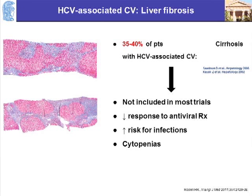This vasculitis appears during the late stages of disease. Biopsies show that about 35 to 40% of these patients already have cirrhosis. This is important because these patients are usually not included in trials, do not respond so well to antiviral therapy, and have an increased risk of complications like infection and cytopenias. So this is a difficult group of patients when you take into account their liver disease.